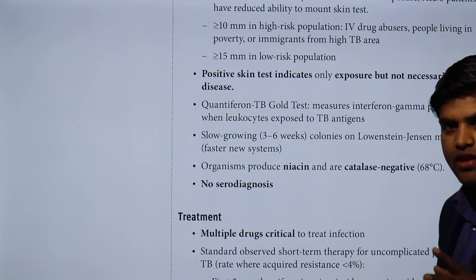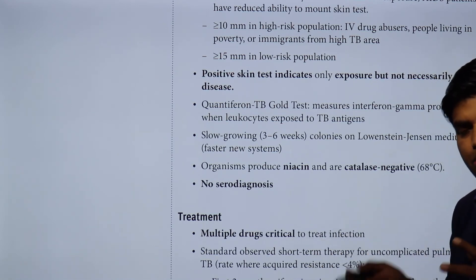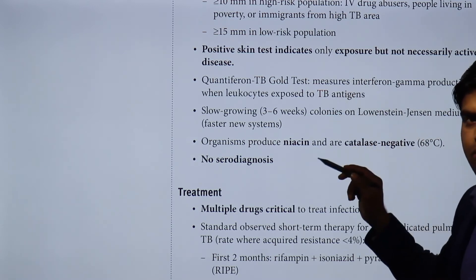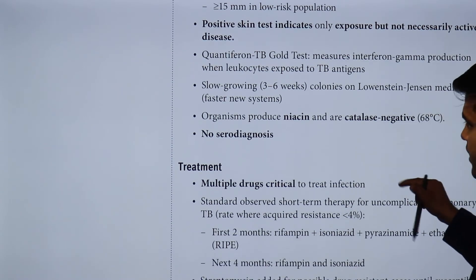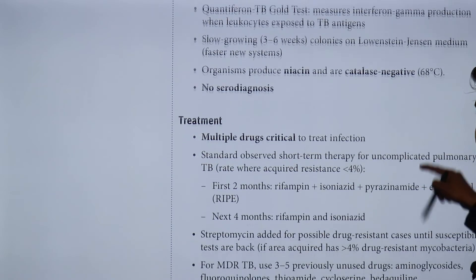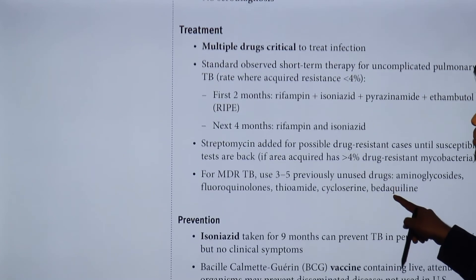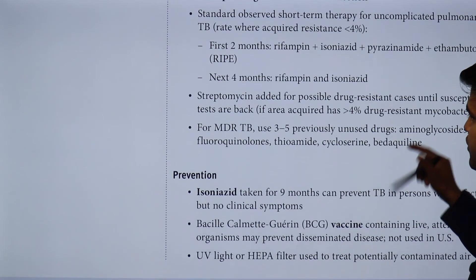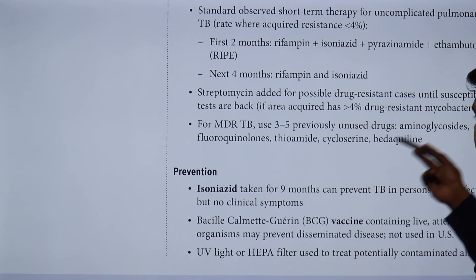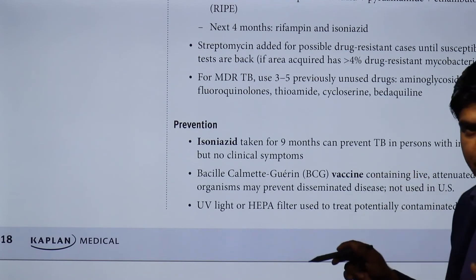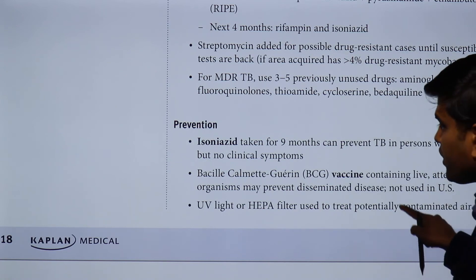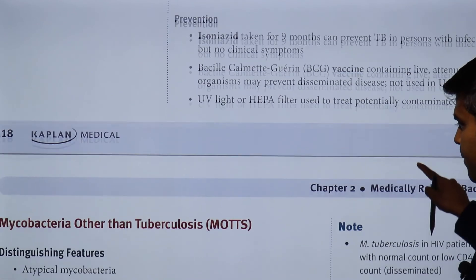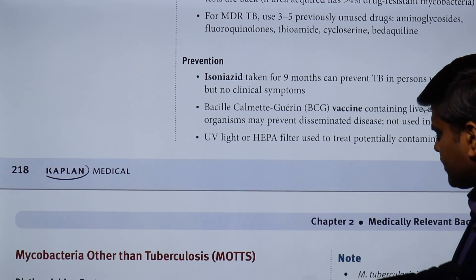A positive skin test indicates exposure but not necessarily active disease. The TB QuantiFERON-Gold test measures interferon-gamma production when leukocytes are exposed to TB antigen — this is a more specific test. Culture on Löwenstein-Jensen medium is slow-growing; newer faster liquid systems like BACTEC are available. The organism produces niacin and is catalase-negative at 68°C. Treatment requires multiple drugs: the first two months use rifampin, isoniazid, pyrazinamide, and ethambutol; the next four months use rifampin and isoniazid. For resistant TB, aminoglycosides, fluoroquinolones, thioamide, cycloserine, bedaquiline, or streptomycin are used. Prophylaxis with isoniazid for nine months can prevent TB in infected persons without clinical symptoms. BCG vaccine with live attenuated organisms may prevent disseminated disease but is not used in the USA.